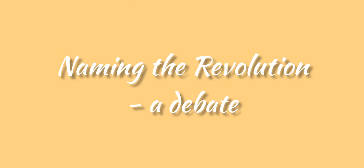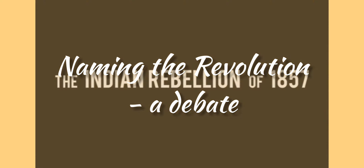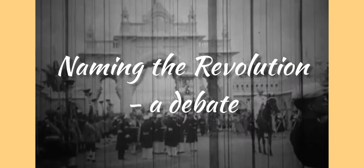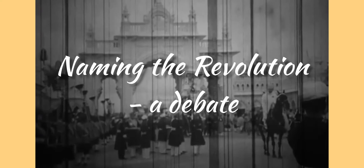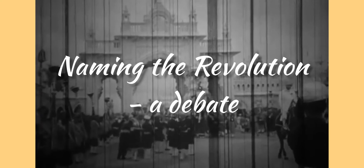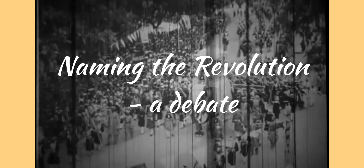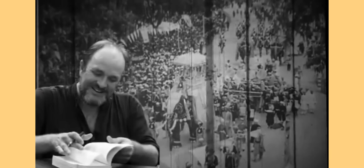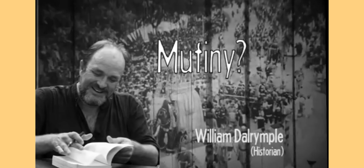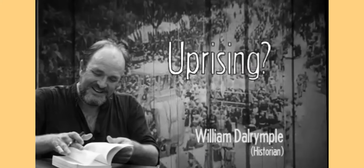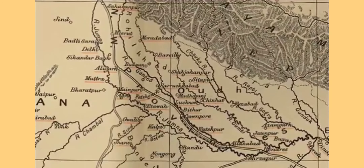Next, the naming of the revolt remains a debate. The revolt of 1857–1858 continues to generate debate and controversy in terms of its character and scope. British writers writing in the aftermath of 1857 called it the Sepoy Mutiny, attributed to the Enfield rifle, implying that the revolt was confined only to Indian soldiers. However, Indian historians have gathered evidence to show that the uprising was much more widespread and powerful.